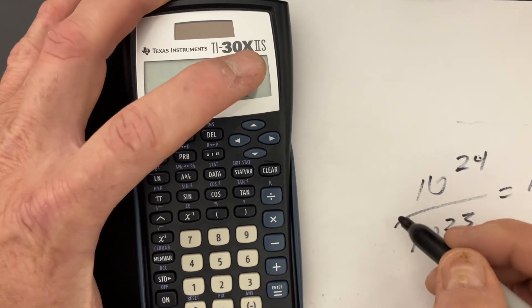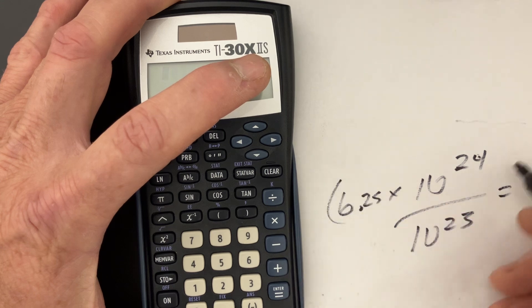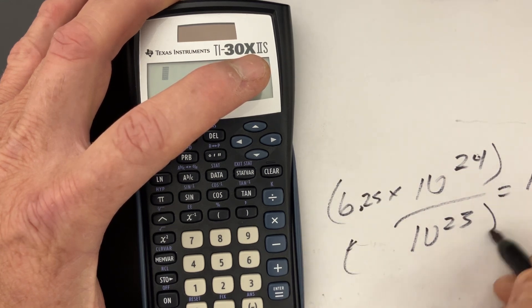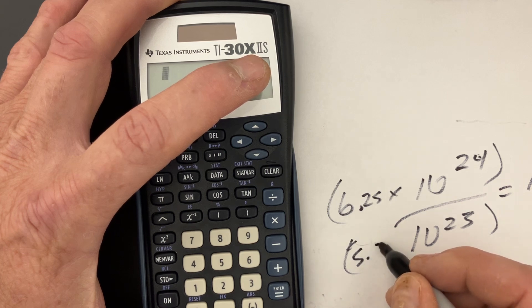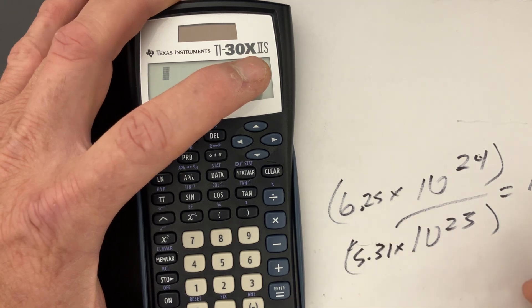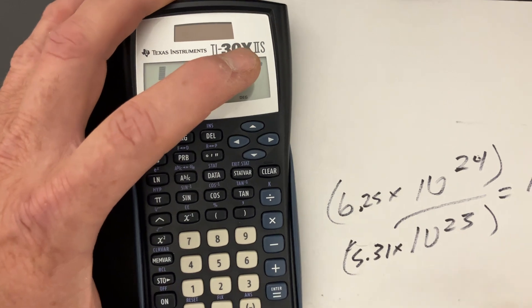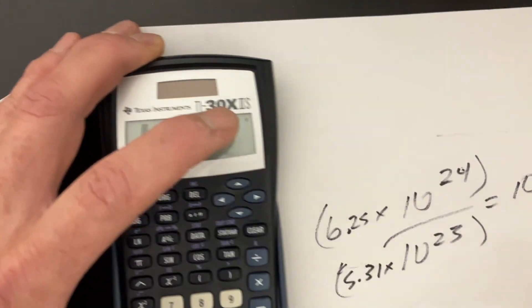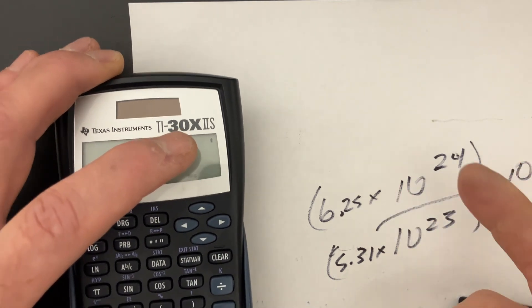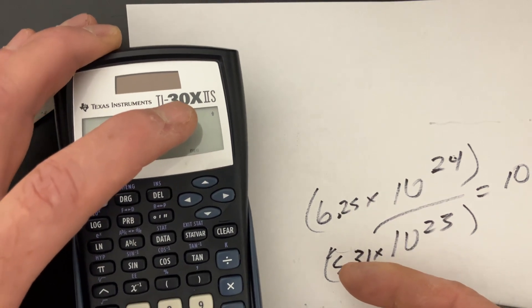But what if we have 6.25 times 10 to the 24th, and we really just want to show how to work the calculator to divide or multiply one over the other. So in the last video I didn't worry about these, I just simplified. But in this video we're going to show how to deal with scientific notation when you have to multiply or divide scientific notation terms.